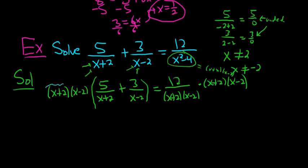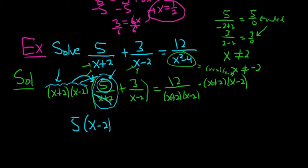So actually, I lied, let's skip a step. So this is what's left: 5. Check this out. And then the (x+2) cancels with this one. So we're left with 5(x-2), right? So again, the (x+2) cancels and we're left with 5(x-2).